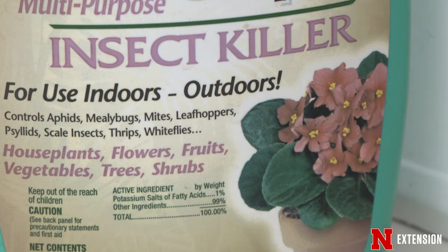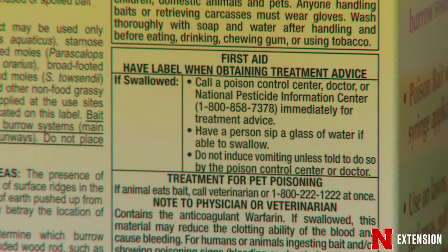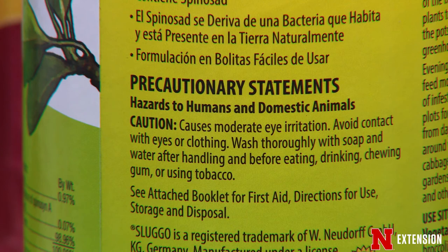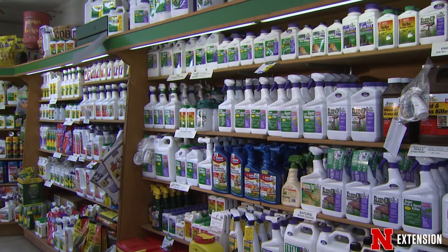Also look at the label to see if there's a certain amount of time that has to pass before people or pets can go back onto the treated area. This is called a restricted entry interval. Oftentimes with many homeowner labels, the restriction is to keep people and pets off the area until the product has dried.